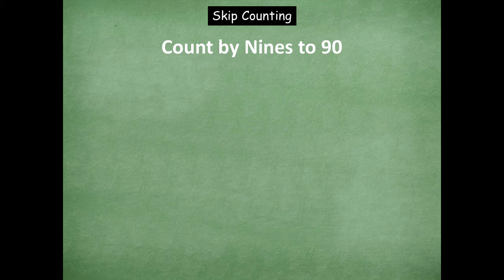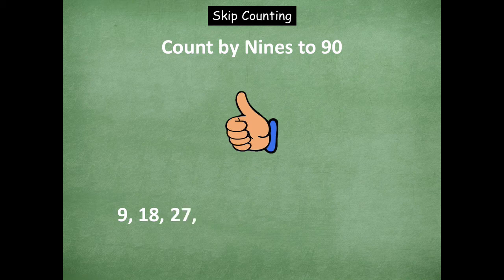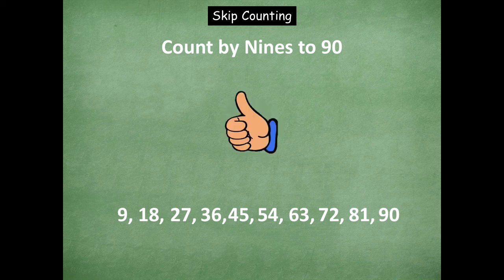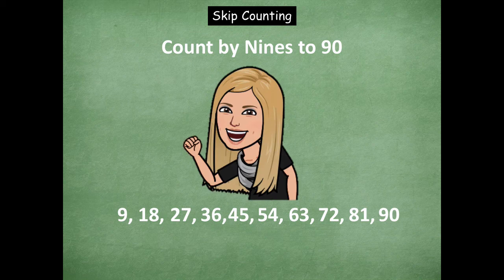Now we're up to nines to ninety. Counting up. Here we go. Nine, eighteen, twenty-seven, thirty-six, forty-five, fifty-four, sixty-three, seventy-two, eighty-one, ninety. Counting down. Eighty-one, seventy-two, sixty-three, fifty-four, forty-five, thirty-six, twenty-seven. Counting up. Thirty-six, forty-five, fifty-four, sixty-three, seventy-two, eighty-one, ninety. Great job friends, you guys nailed it.